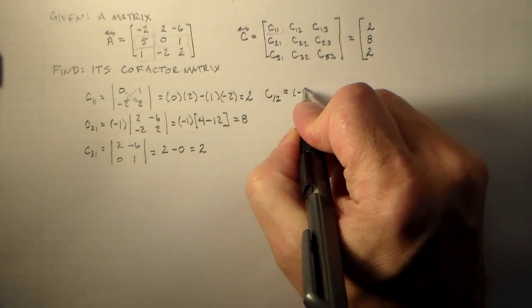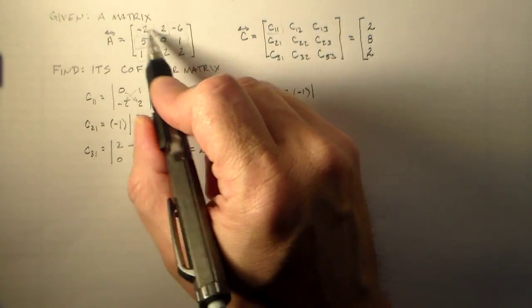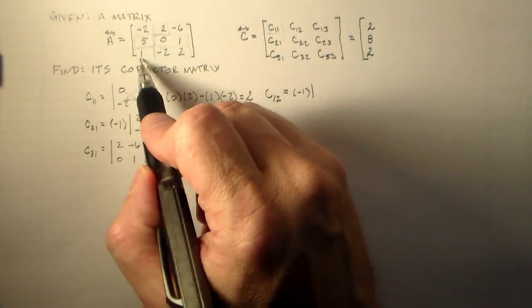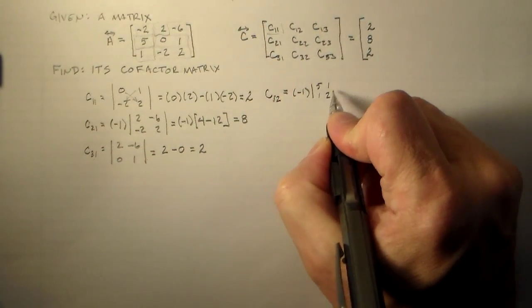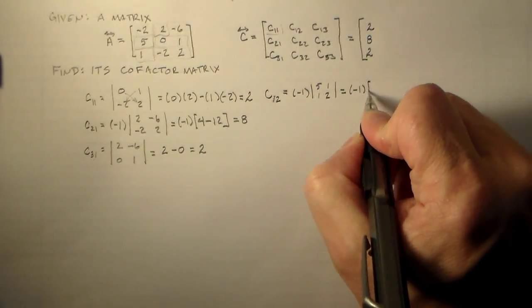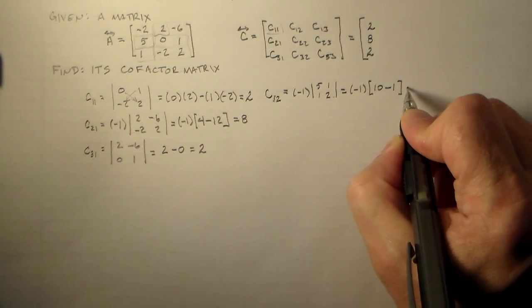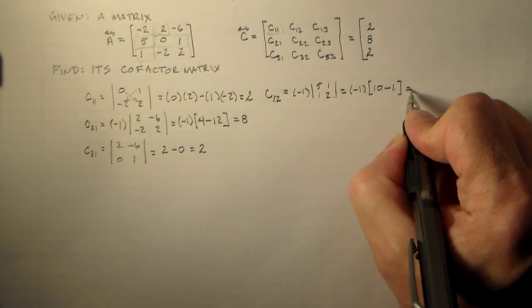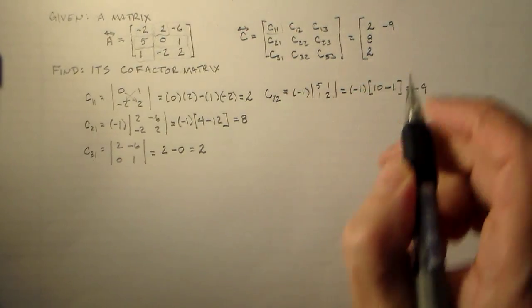1 plus 2 is 3. So we multiply by minus 1. We want to do everything not in this row in this column. So we have 5, 1, 1, 2. Which is equal to minus 1 times 10 minus 1, which is 9 times minus 1, which is minus 9. So the minus 9 sitting there.